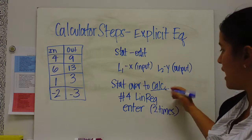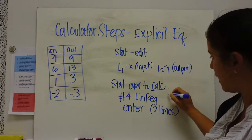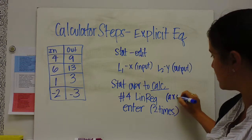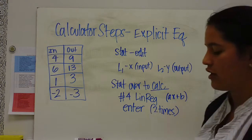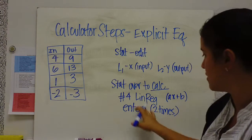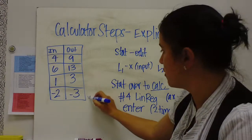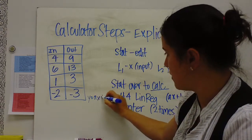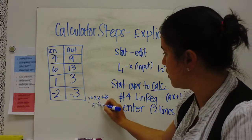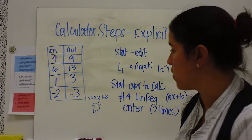it's going to say line, and then it's going to have ax plus b. You hit enter 2 times, and it comes out and it gives you, for this example, it tells you y equals ax plus b, and then it tells you a is 2 and b is 1.